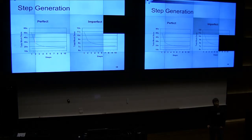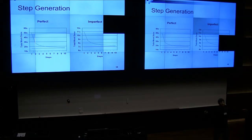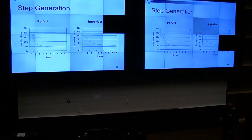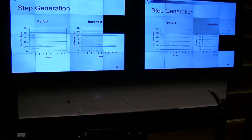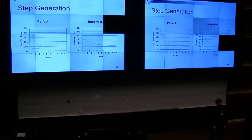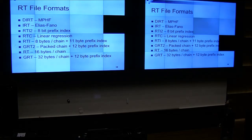Rainbow tables are probabilistic — meaning not every password in your key space is guaranteed to be in your rainbow tables. The red line is the limit — basically this is where after each link in the chain you sort and remove duplicates, but that would never be done because the amount of sort work would outweigh the benefit. So there are many formats.